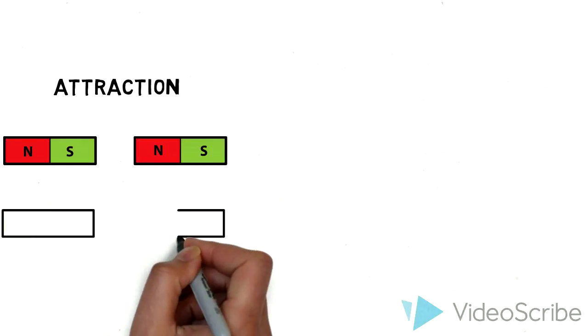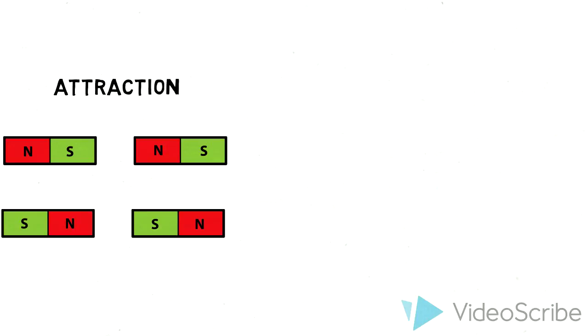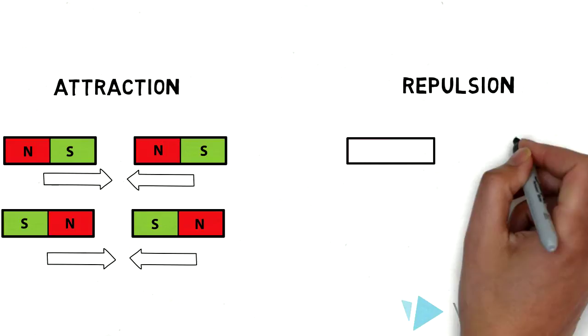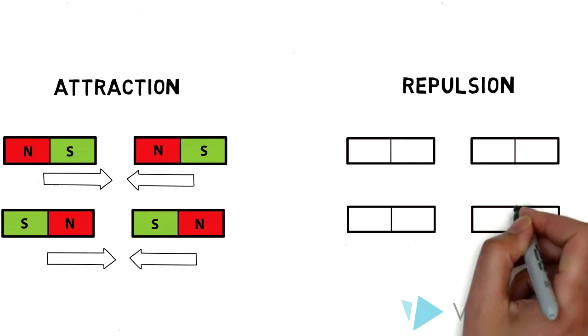As you saw before, each magnet has a north and south pole. Magnets attract when opposite poles are facing each other. Conversely, magnets repel when like poles are facing each other.